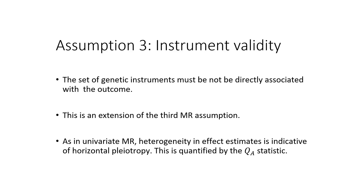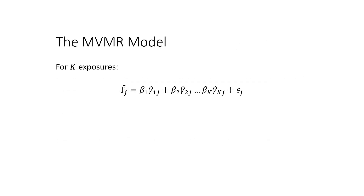Now that we have briefly explored each of the multivariable MR assumptions, we can consider the underlying regression model used to estimate our direct causal associations. This model represents a generalization of the IVW model used in univariate summary MR analyses. Big gamma hat j represents the gene-outcome association for the j-th genetic variant, and gamma hat 1j represents the gene-exposure association for the j-th variant with respect to exposure 1. We can extend the MVMR model to include an arbitrary number of exposures, and we also omit an intercept, as is the case for the univariate IVW model. The regression coefficients are then interpreted as the direct effect for each corresponding exposure.